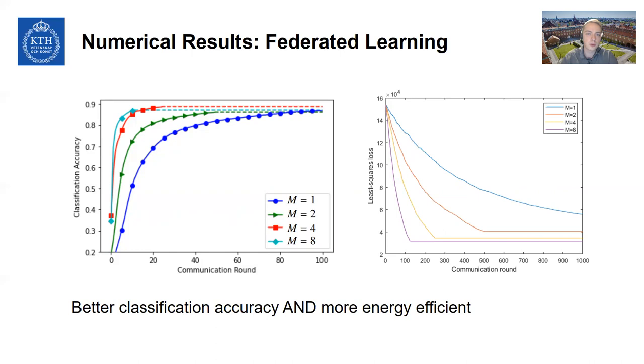So if you do one retransmission, as in the green line, we only allow for 50 communication rounds in total. But we see that despite this, with only 25 communication rounds, the M equals four line achieves a higher classification accuracy than M equals one. And in addition to being more accurate, it's also more energy efficient because we're spending the same amount of resources on communication. But now we're spending fewer resources on computation because the devices only have to train their networks 25 times rather than 100.